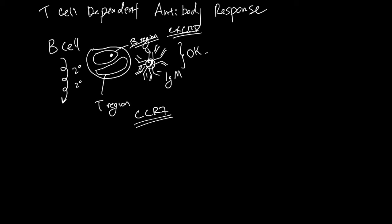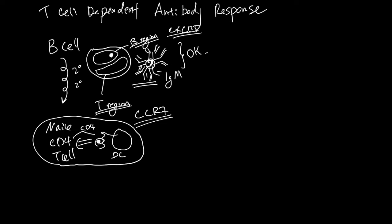If a naive CD4 T cell in this T region, the T cell receptor and CD4, is presented with MHC2 and an antigen, let's say by a mature dendritic cell, and this antigen can also be part of the thing that stimulates this B cell that's now secreting this okay IgM, this binding will activate this particular naive T cell.